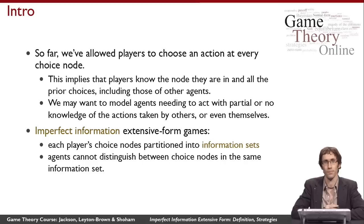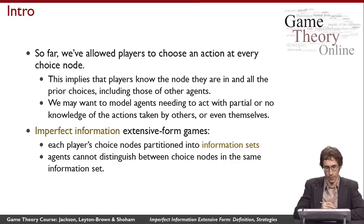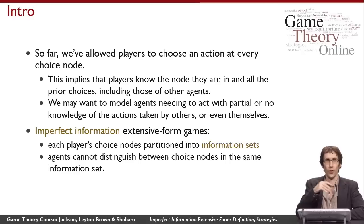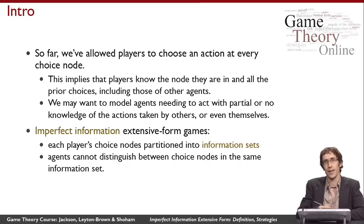In order to model this richer situation where players aren't able to observe everything that their opponents do, we're going to add something new to the game representation. We're going to call it the imperfect information extensive form. The way this works is we take the old definition, but we say that players consider some choice nodes to be equivalent to each other — putting the choice nodes for a given player into equivalence classes.